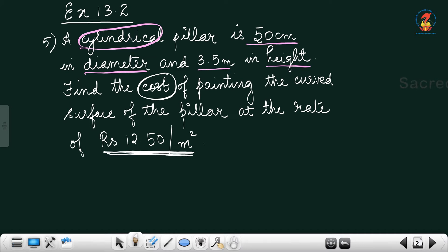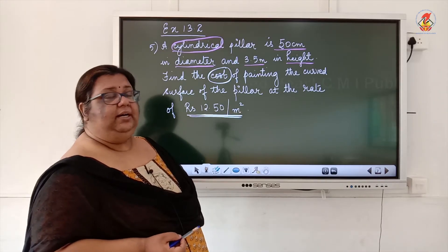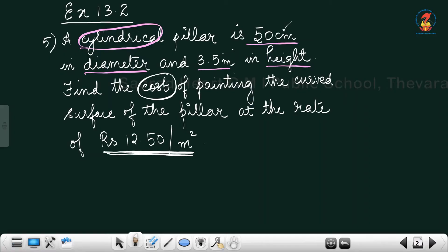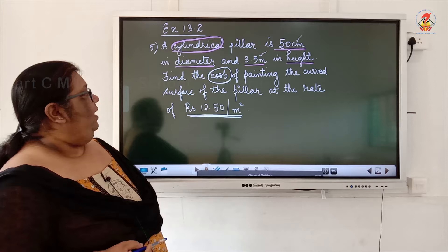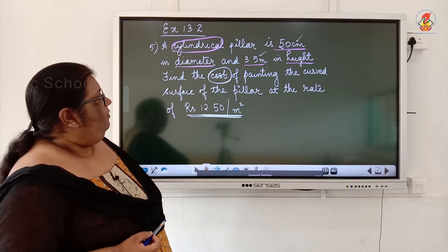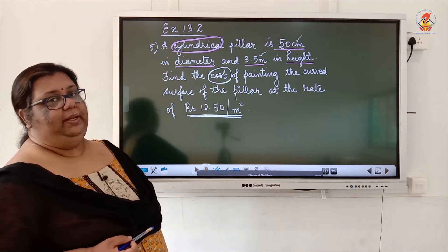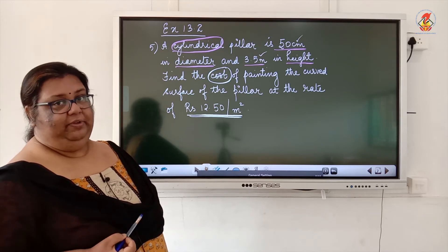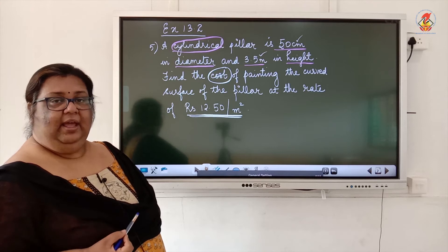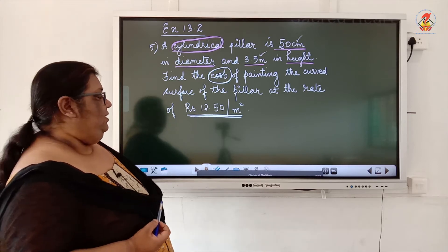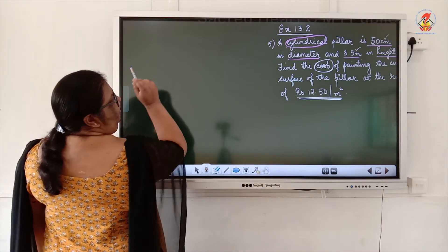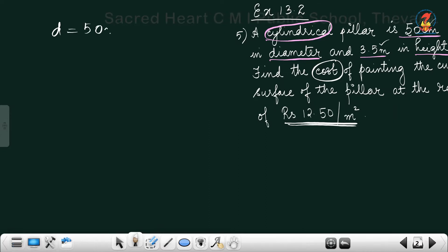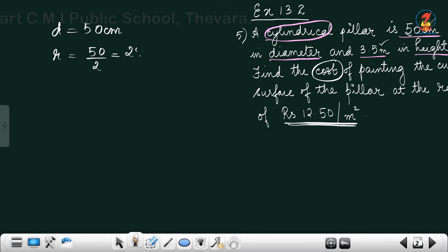The rate is given in meter square, but the diameter is in centimeters and the height is in meters — two different units. We need to convert to a single unit. We will first find the CSA, then find the total cost of painting on the curved surface of the cylindrical pillar. Diameter is given as 50 centimeter, so radius = 50/2 = 25 centimeter.